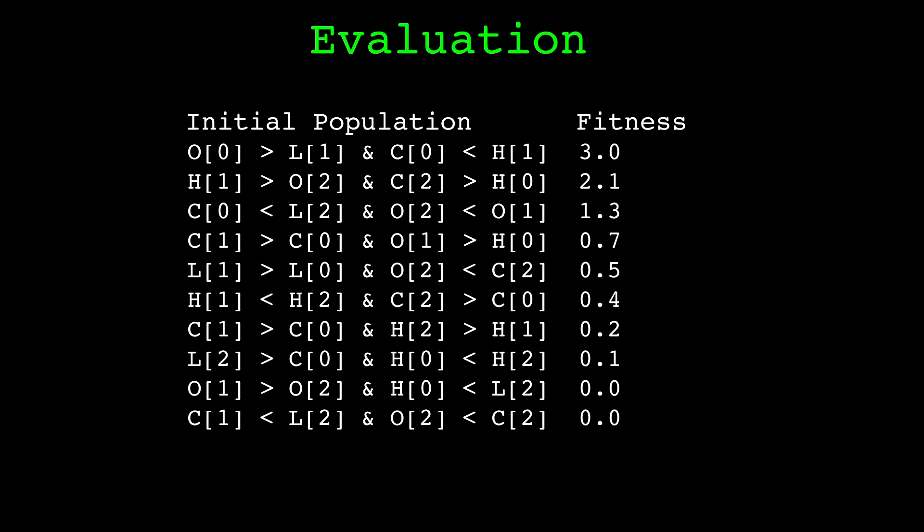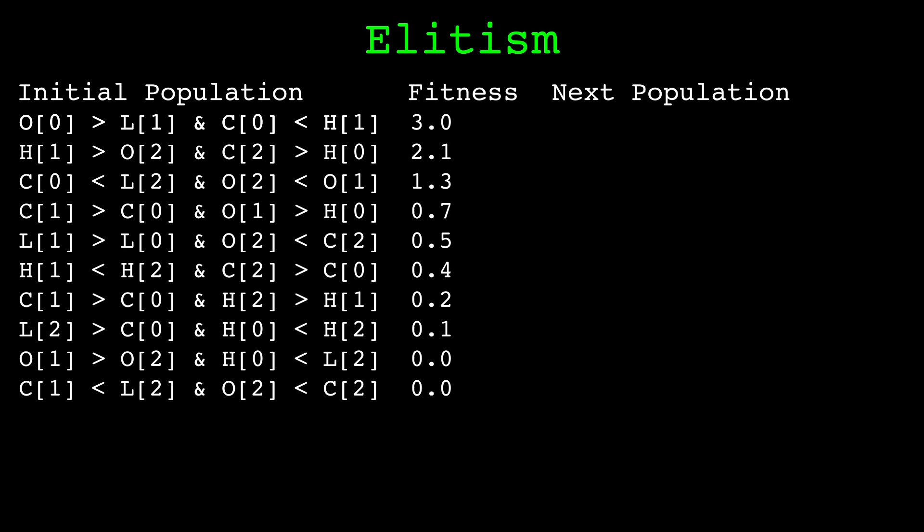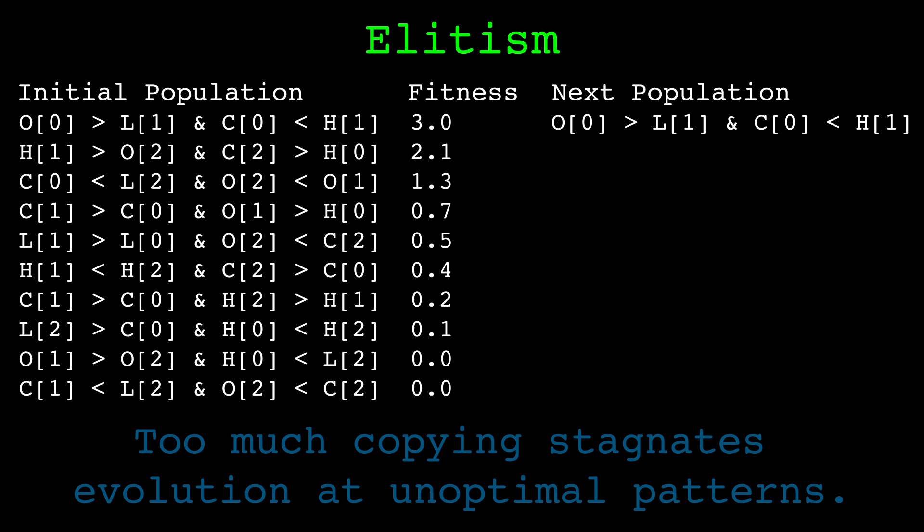Moving on to elitism. Elitism selects the current best patterns and copies them for the next generation. We can select either the single best or a small percentage of the best performing patterns. This way, the best performing pattern found so far will always remain at the top of the population. Elitism should be used sparingly — if too many of the best patterns are copied, the population evolution could stagnate and suboptimal patterns could be found. I prefer to copy just the single best pattern.